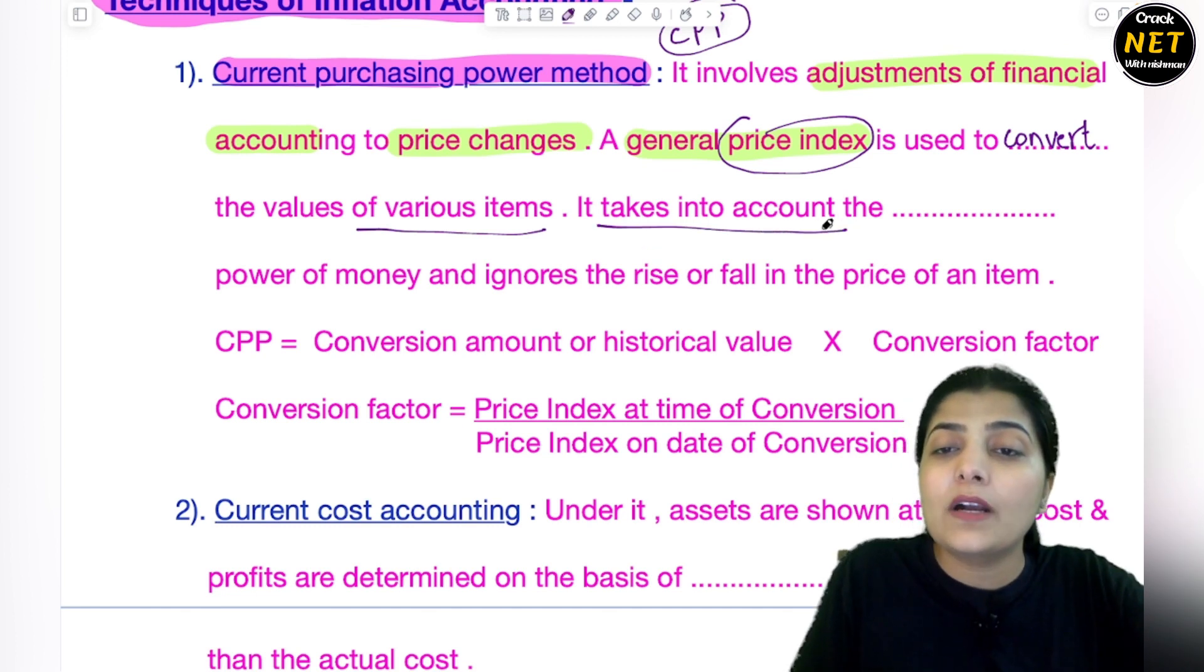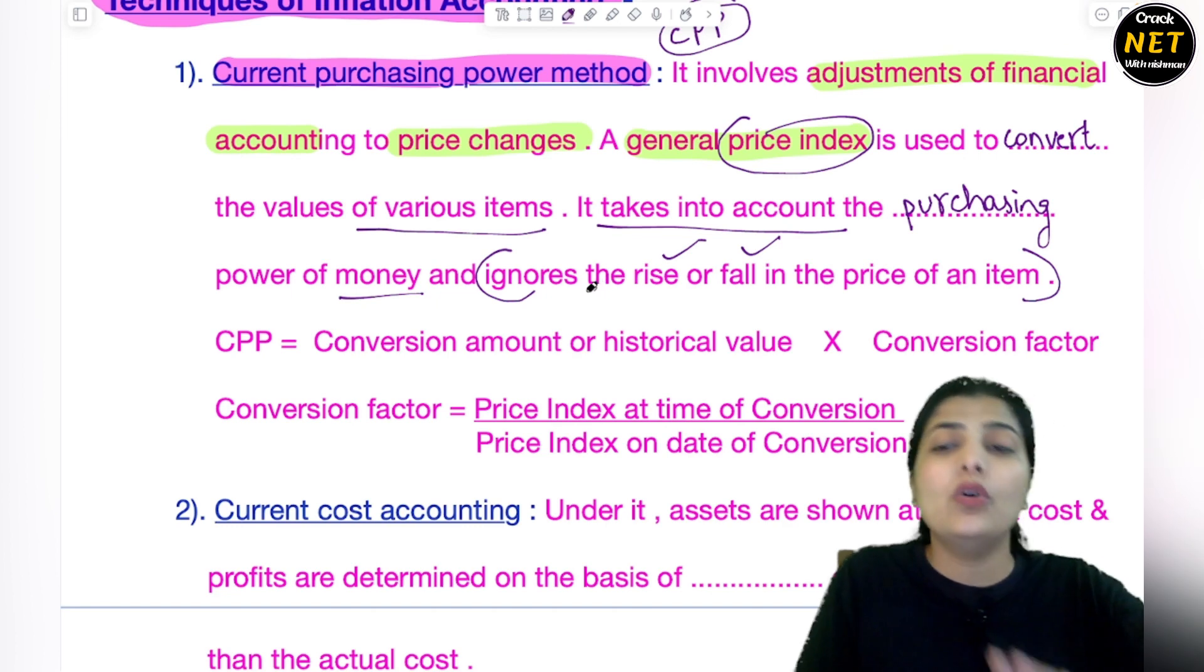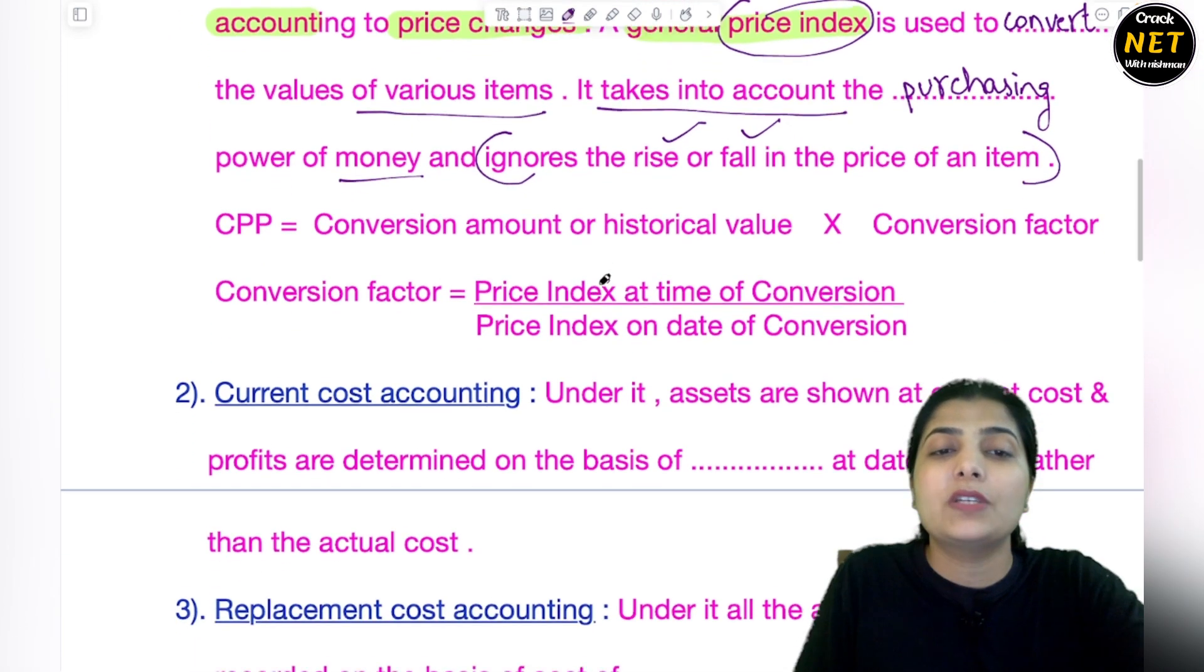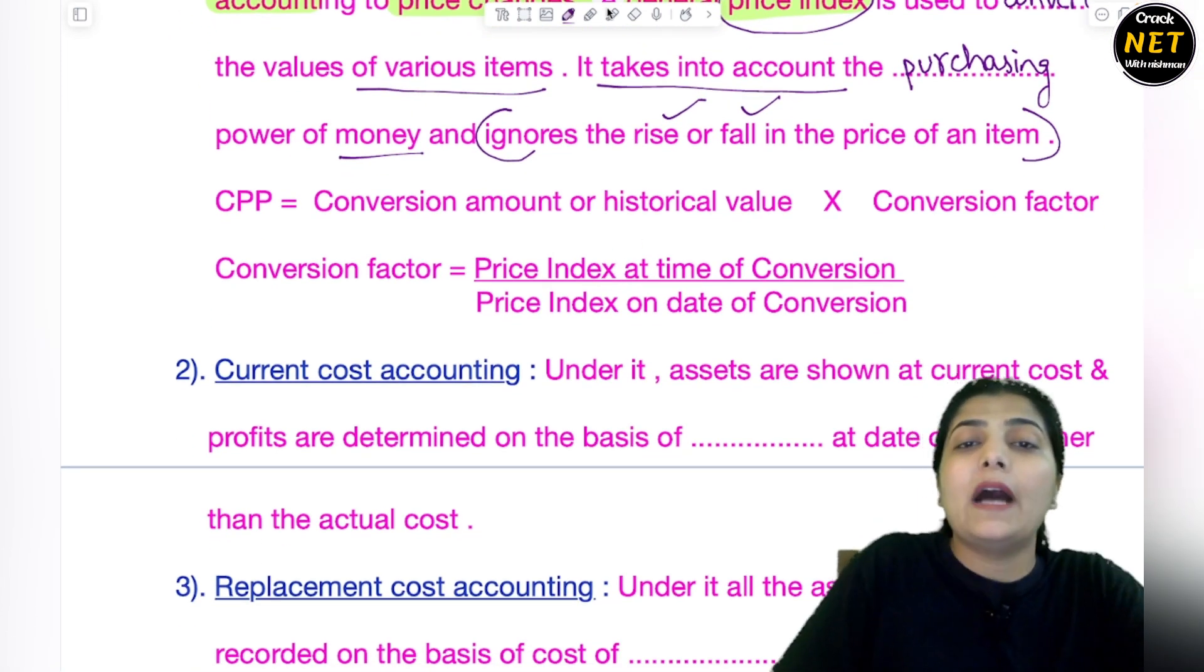It takes into account what? It takes into account the purchasing power of money. What is the purchasing power of money - that is taken into account. And it ignores the rise or fall in the prices of an item. Those other things are ignored. Just purchasing power of money is used.